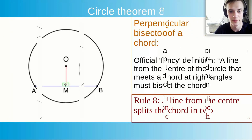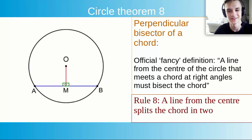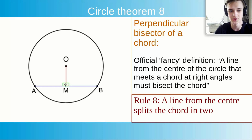Circle theorem 8, the last one we're going to cover: the perpendicular bisector of a chord. A line from the centre of the circle that meets a chord at right angles must bisect the chord. Simply put, a line from the centre splits the chord in two and creates two right angles, as you can see from the diagram.